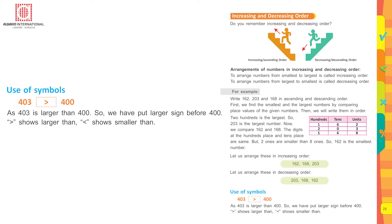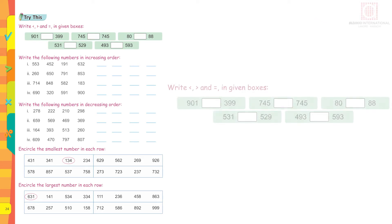Use of symbols. This symbol denotes greater than. As 403 is larger than 400, so we have put the larger sign before 400. This sign shows larger than, and this sign shows smaller than.